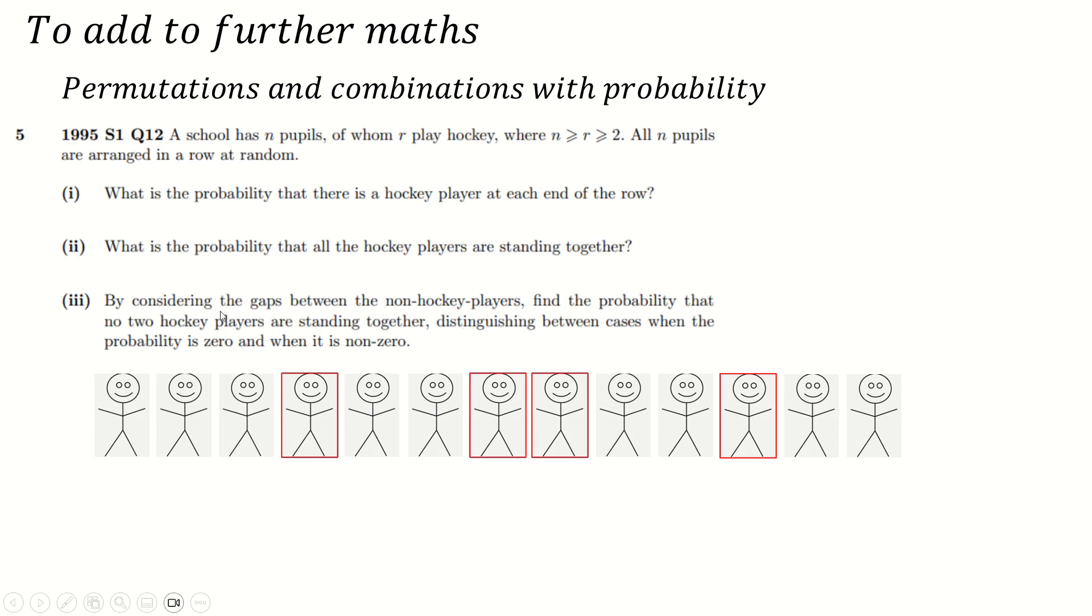What's the probability that if you line them up in a row, there's a hockey player at the start and the end. Well, to do that, you just take a hockey player and stick them at the front. There are r ways of doing that because there's r players. And then you take one of the remaining r minus one hockey players, because you already used one of them and put them at the end. So r times r minus one. And now you have n minus two people, and you just need to arrange those n minus two people in the middle, which is n minus two factorial. And of course it's a probability. So then you divide by the total number of ways of arranging them without any restrictions, which is n factorial.